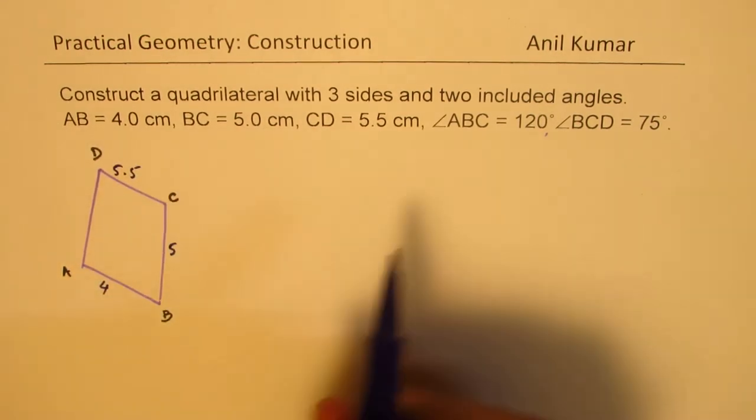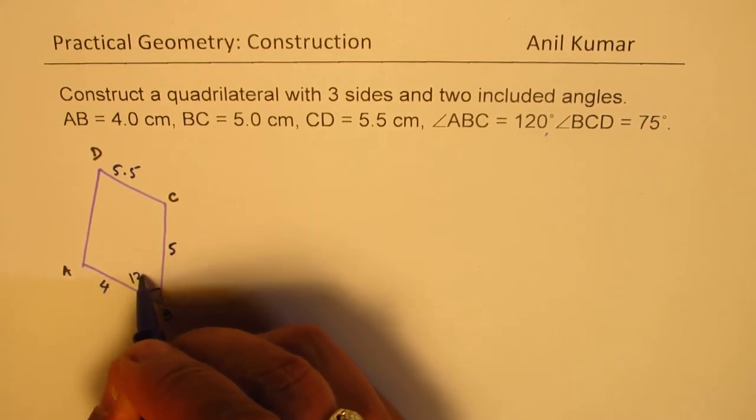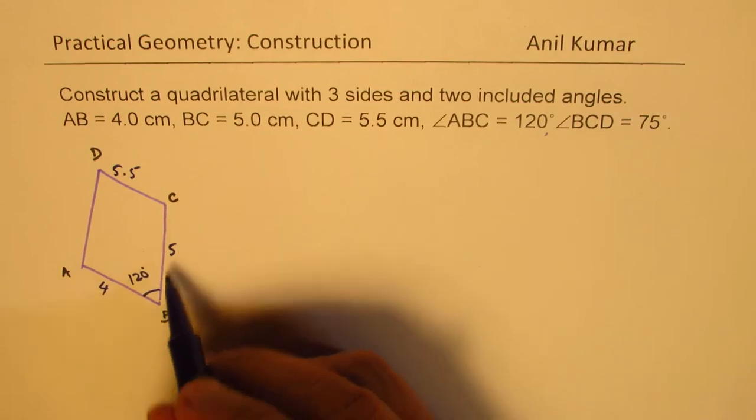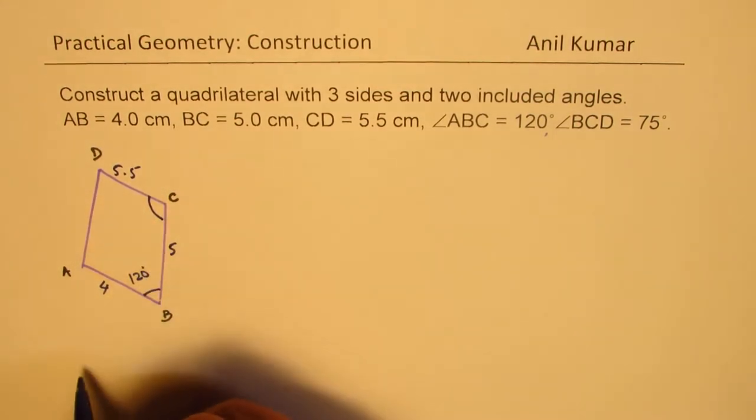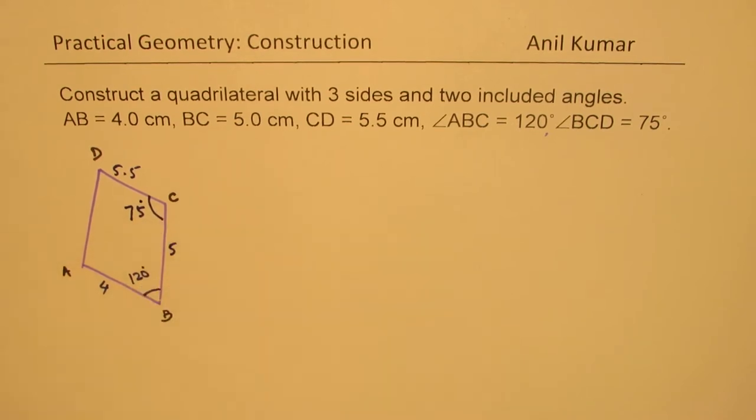CD is 5.5. Angle ABC, this angle is given to us as 120 degrees, and angle BCD is given to us as 75 degrees. These are the two angles given to us.